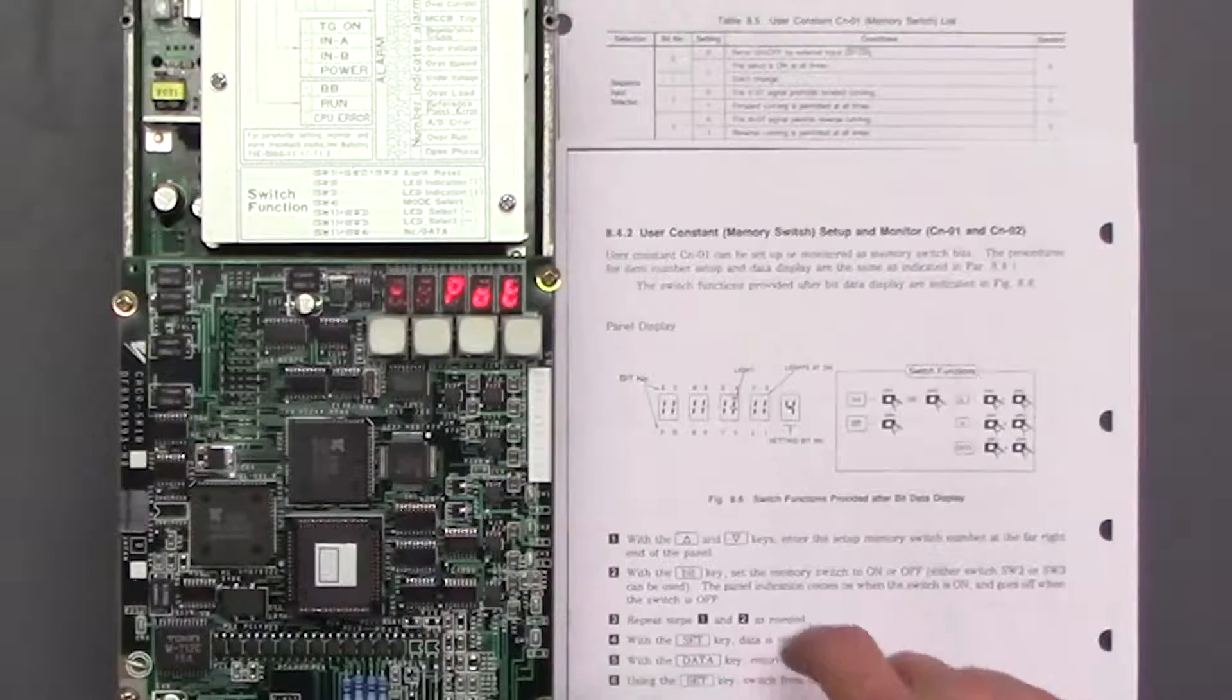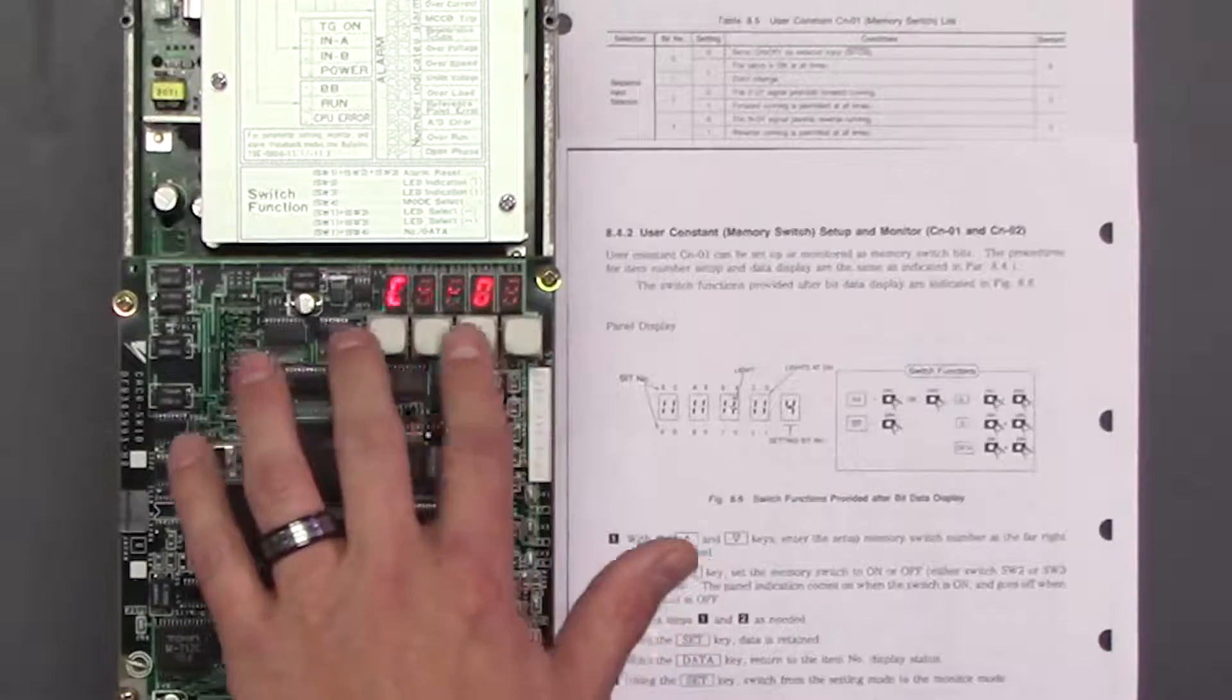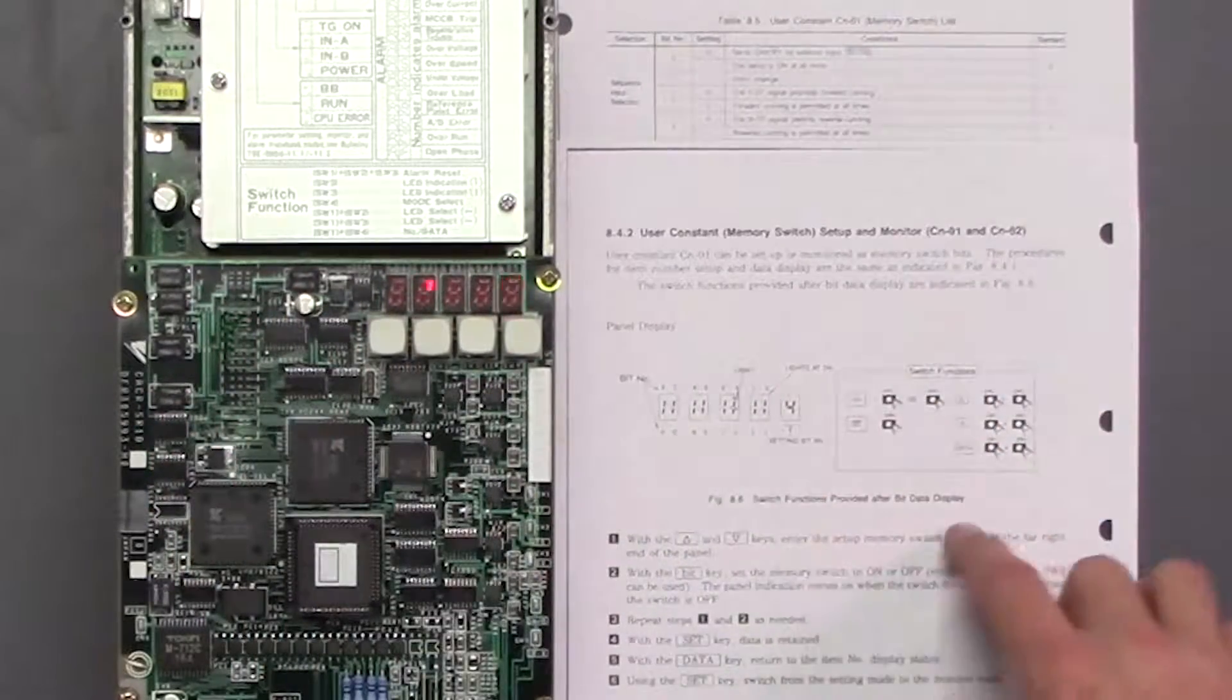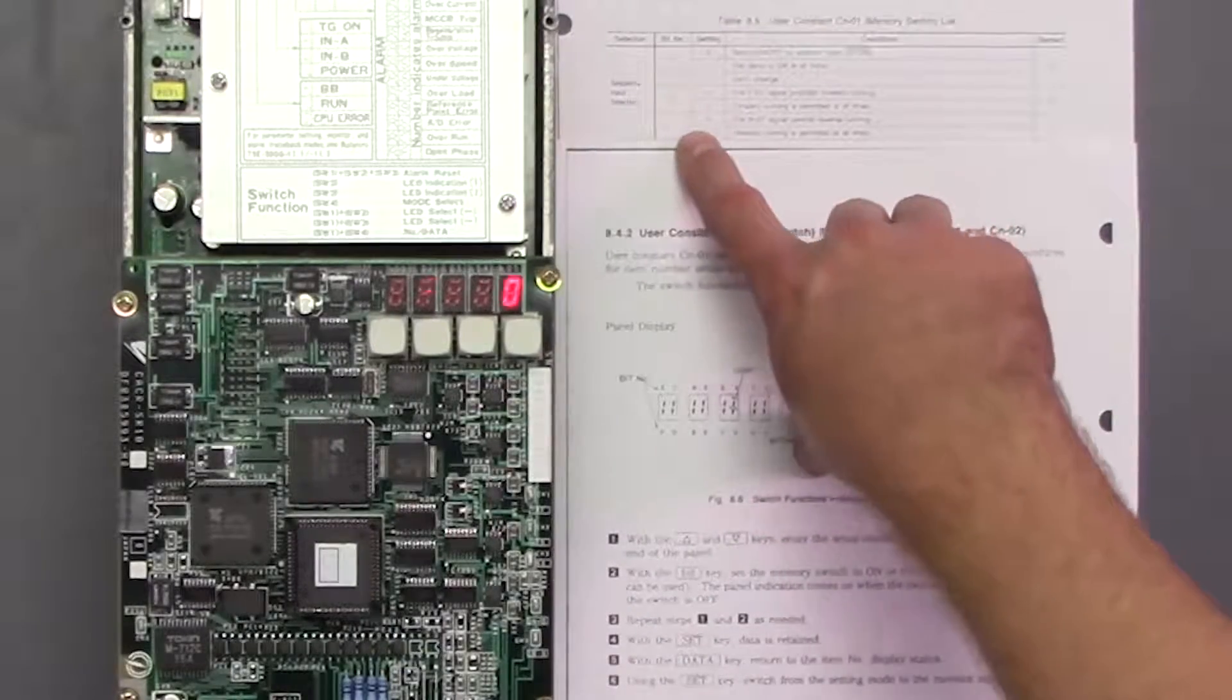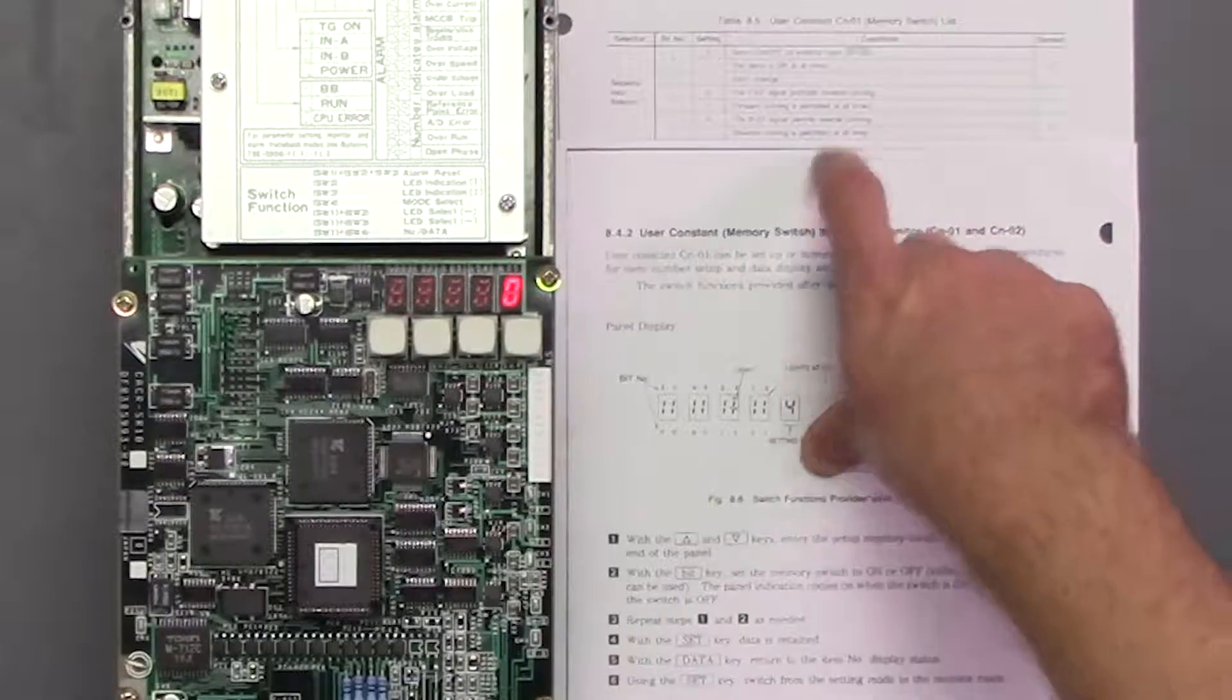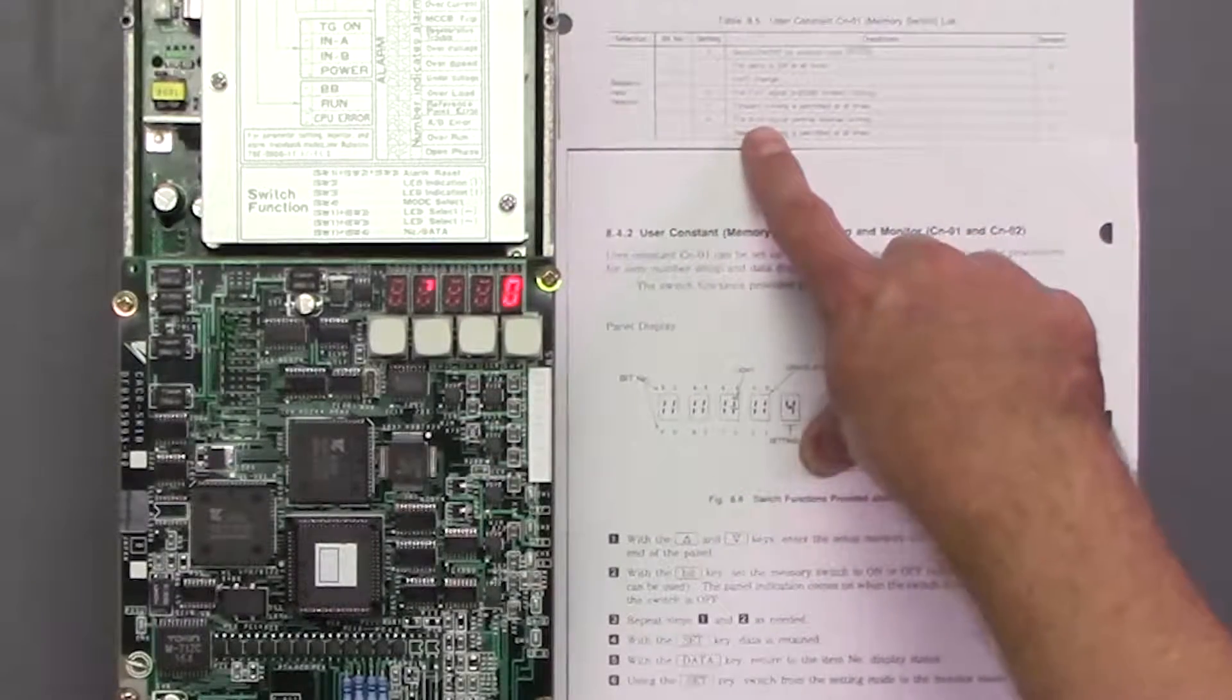And remember, if we go into CN01, it's going to change all of our bits. And bit number two is the P0, and bit number three is the N0.